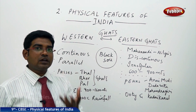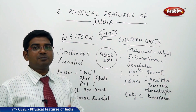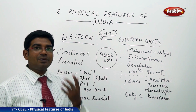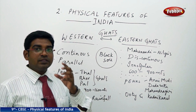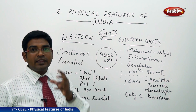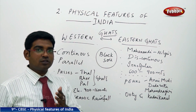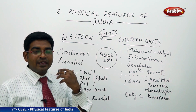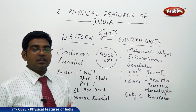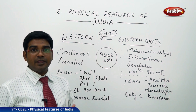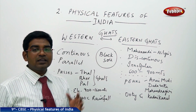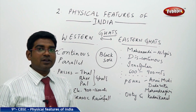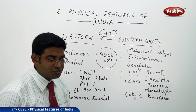The Deccan Plateau was formed because of volcanic eruption activity, and most of it is made up of igneous and metamorphic rocks which have been continuously eroding. As heavy erosion occurred, it transformed into black soil over a larger part of the Deccan Plateau region.